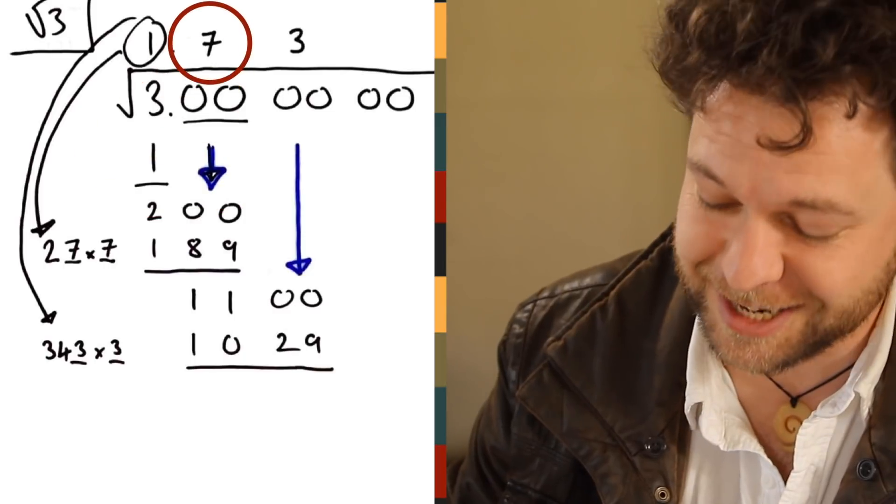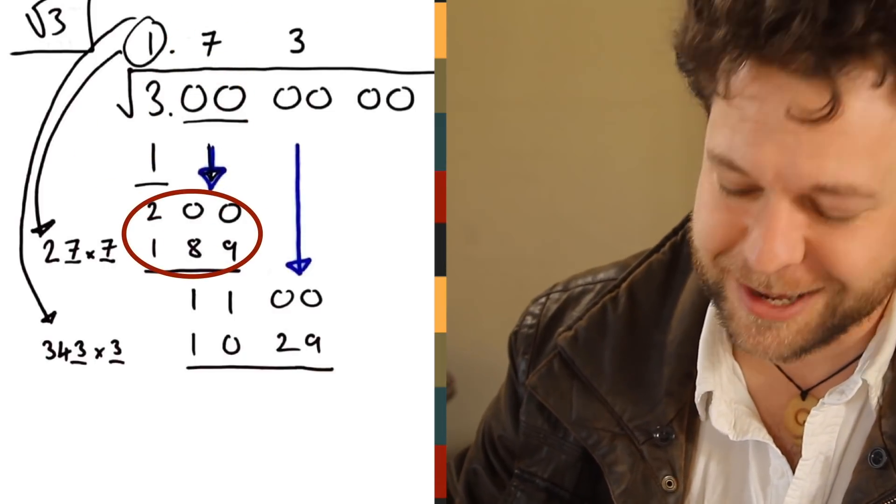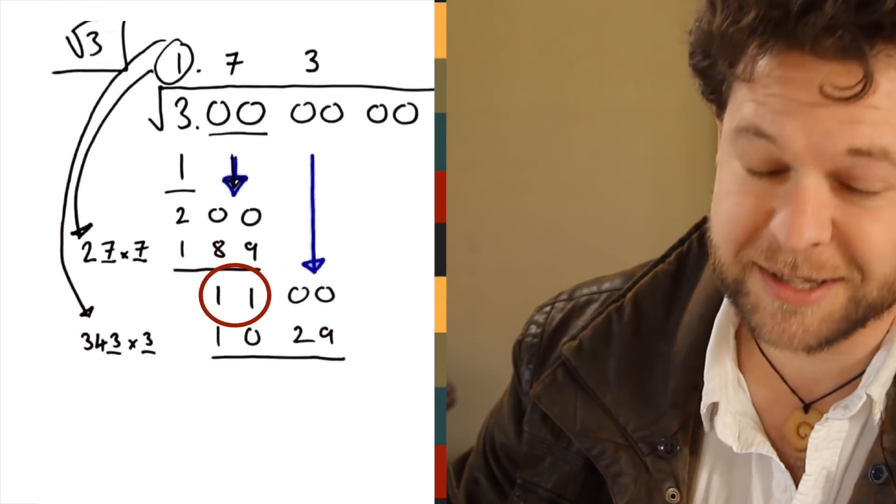Once I realize that, 7 is the next digit in my answer, so I'll write 7 at the top. Calculate the difference between the 189 and the 200 I've got, and then start the process again.